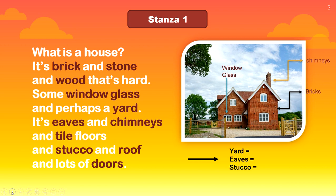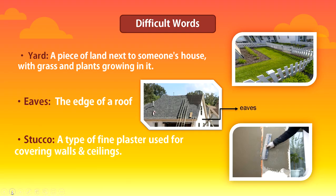There are some difficult words in this stanza: yard, eaves, and stucco. Yard is a piece of land next to someone's house with grass and plants growing in it — it may or may not have grass. Eaves means the edge of a roof, which can be seen in the picture as elevations from the roof. Stucco is a type of fine plaster used for covering walls and ceilings.